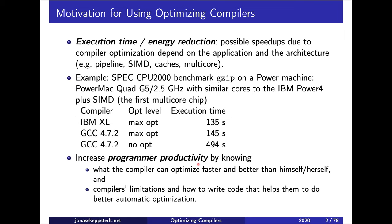What we want is to get as fast code as possible but not waste time writing low-level things that the compiler can do automatically, since that wastes our time and makes the source code harder to read afterwards. We should find a suitable level that is good for both humans and compilers.